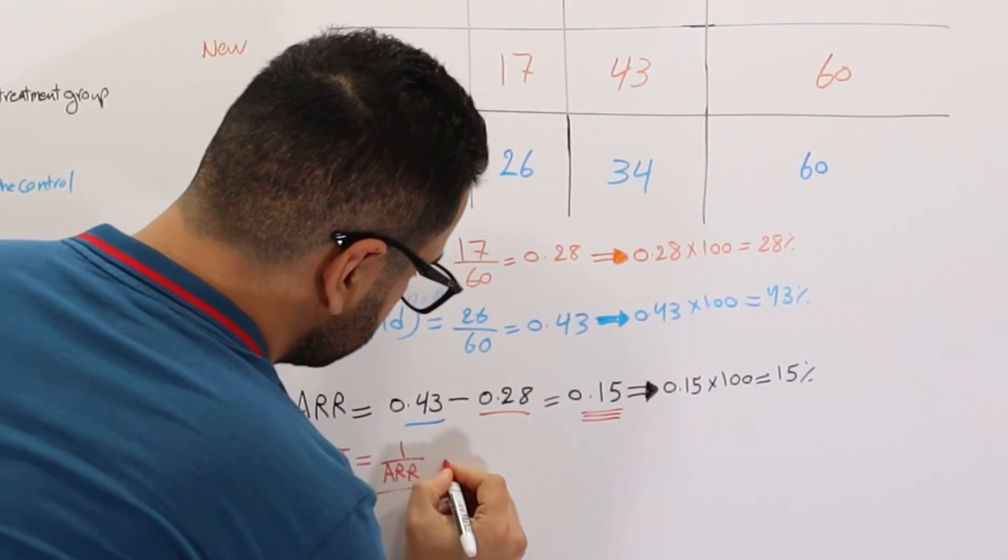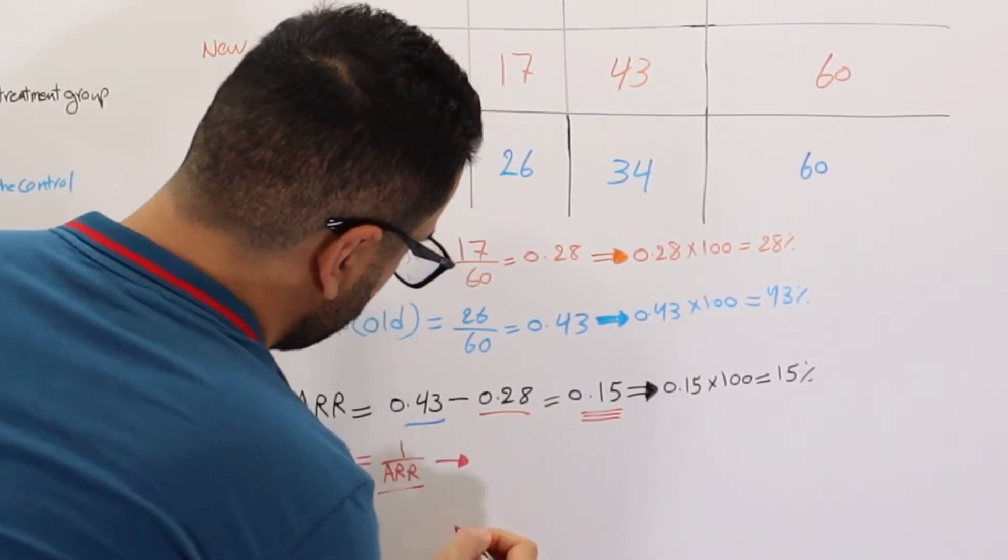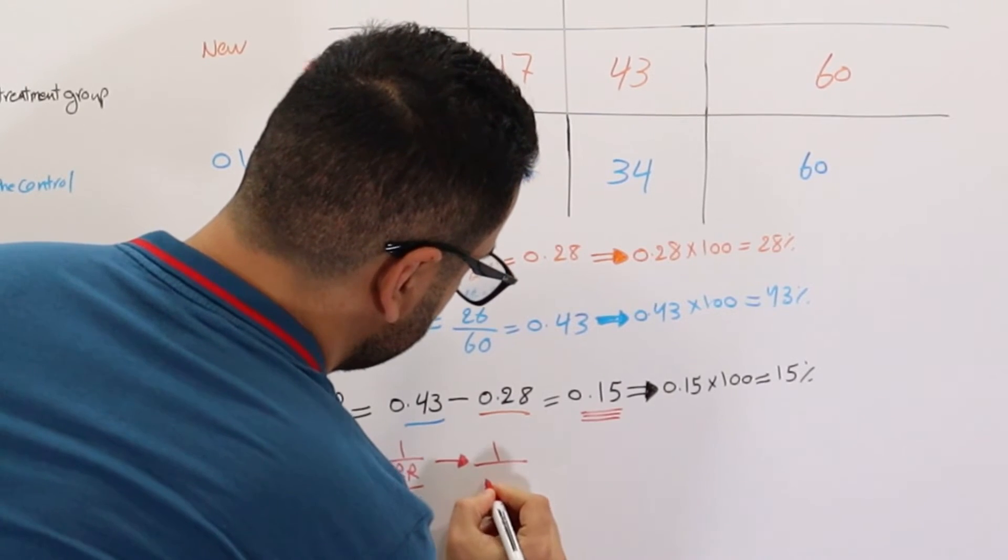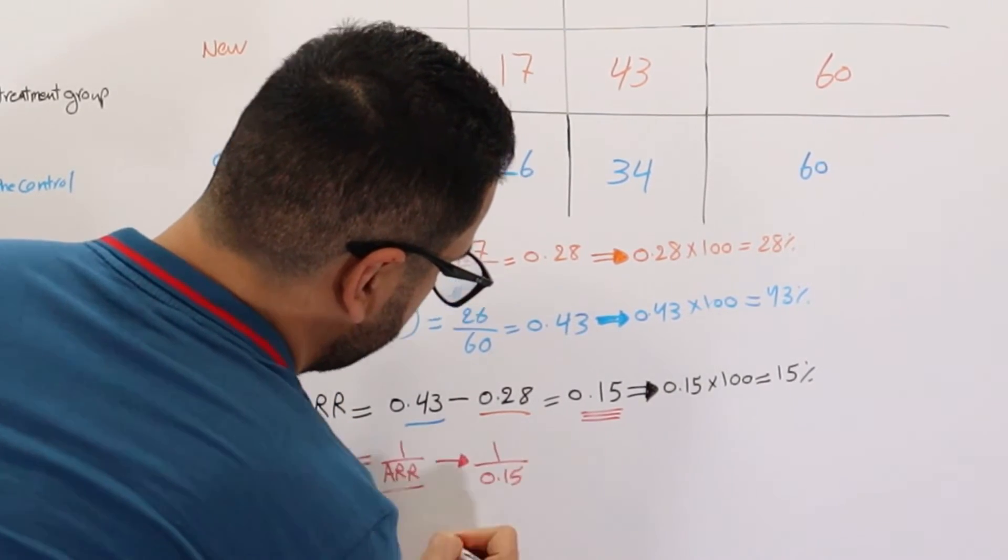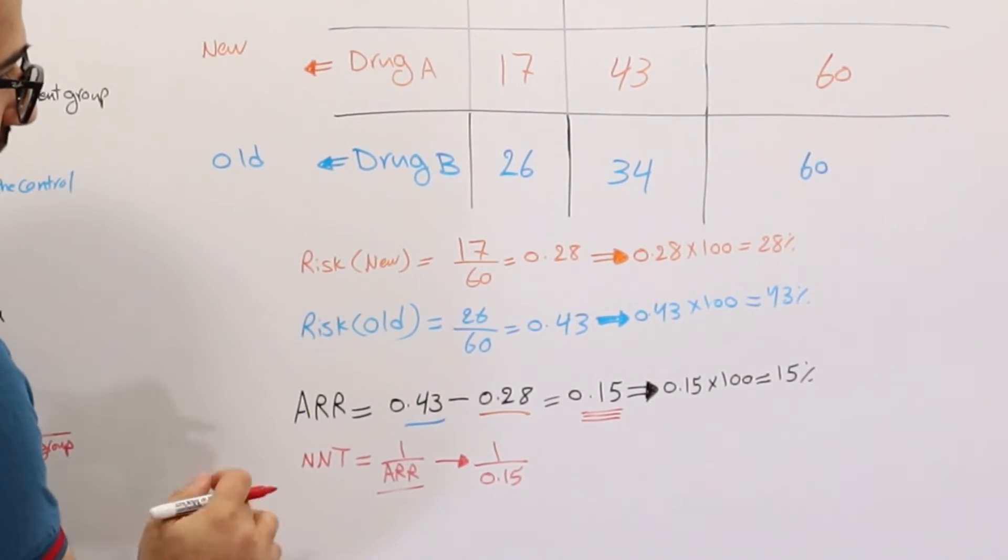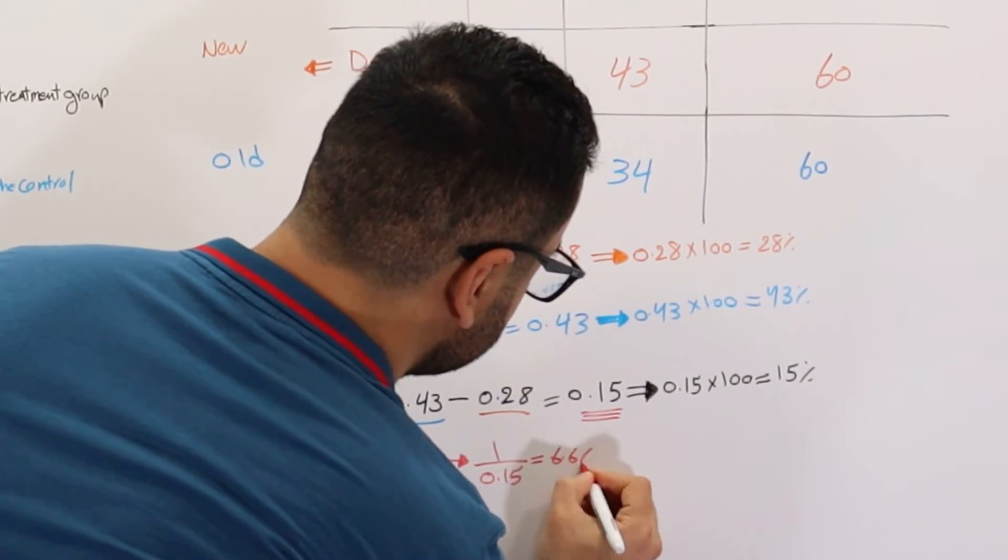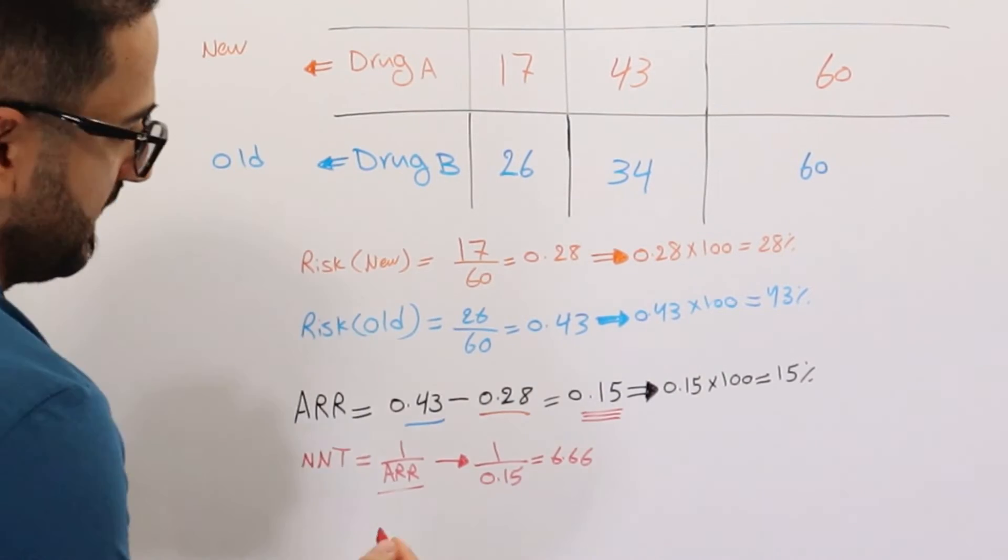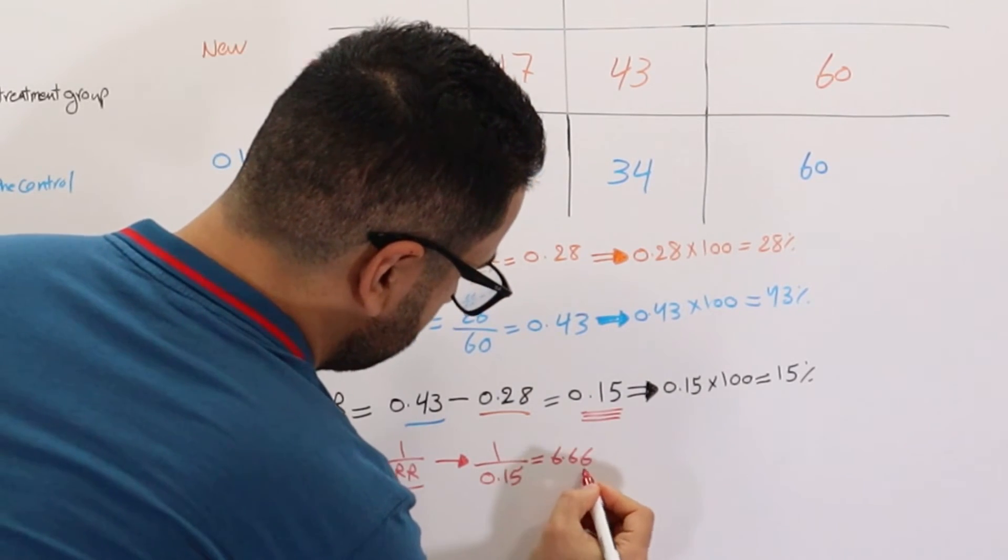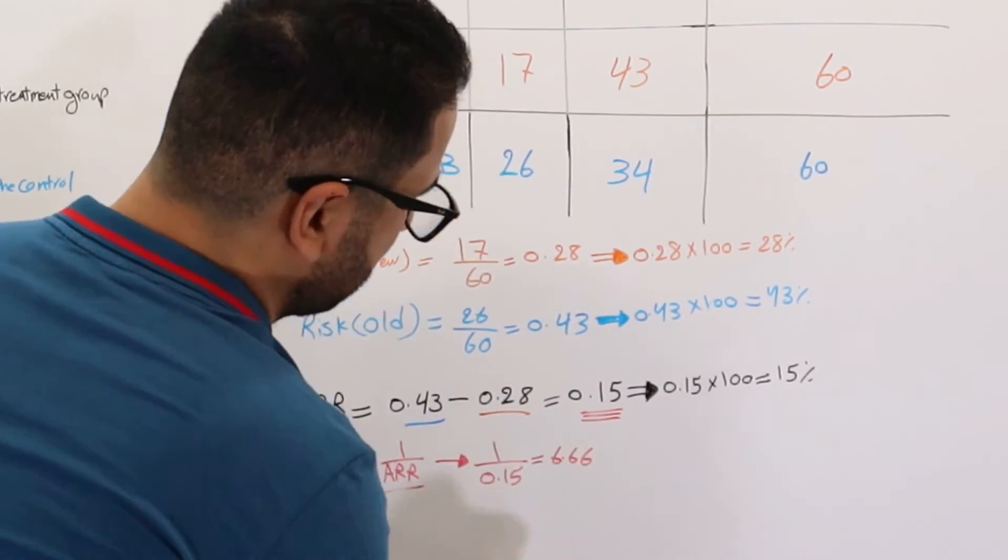So over here, 1 over 0.15, to find out the number needed to treat, it's going to be 6.66. So now I have a decimal. I have 6.66.